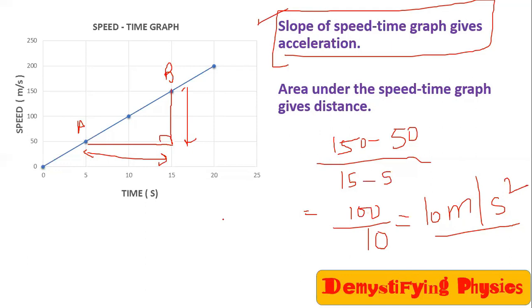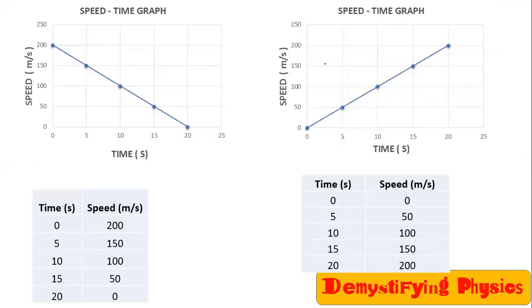From the speed-time graph we can find two things: acceleration by finding slope, and distance by finding the area under the line. Now comparing two graphs — in the first case the line slopes downward, meaning speed decreases uniformly: 200, 150, 100, and in every 5 seconds speed decreases by 50 meters per second. This represents uniform retardation. In the second case the line slopes upward, representing uniform acceleration.